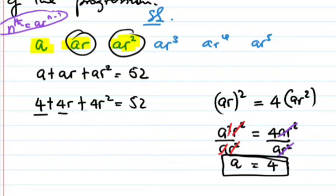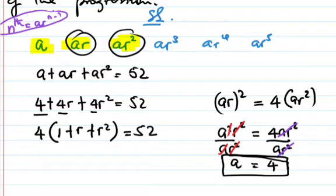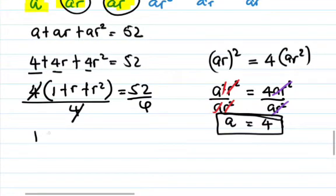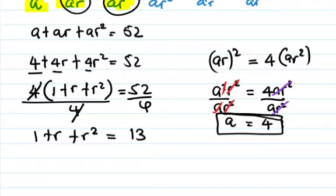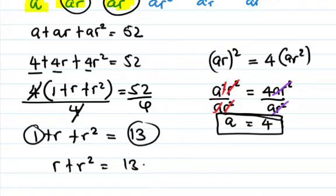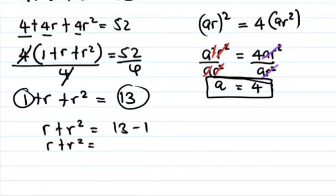From equation one, we have ar is 4. So we're putting 4 here: 4 + 4r + 4r^2 = 52. We can factor out 4: 4(1 + r + r^2) = 52. Divide 52 by 4, which is 13. So 1 + r + r^2 = 13. Therefore r + r^2 = 12.